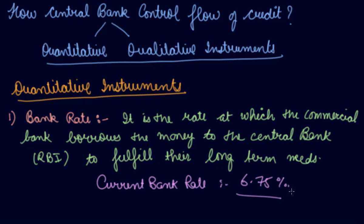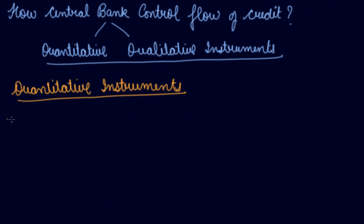If the bank rate is increased, commercial banks have to pay more interest on what they borrow from the central bank. In that case, they will reduce the credit flow — they won't be able to take the loan, or they will take a lesser loan from the central bank. This will ultimately reduce the credit flow in the economy.